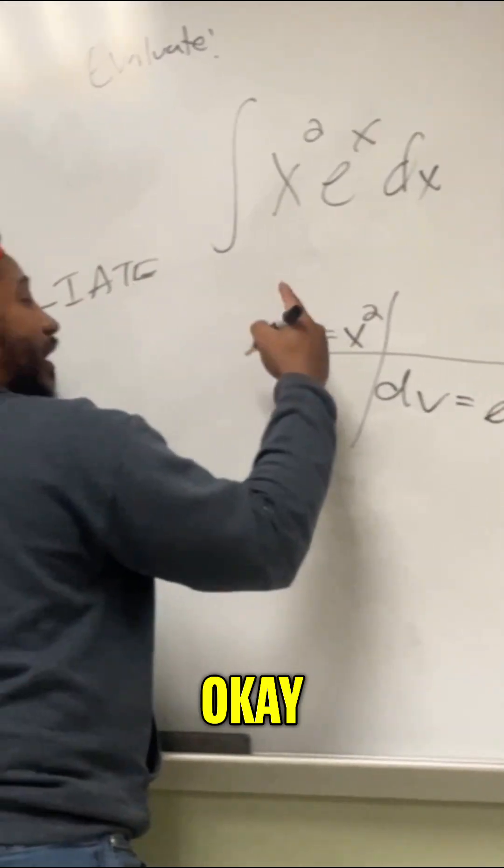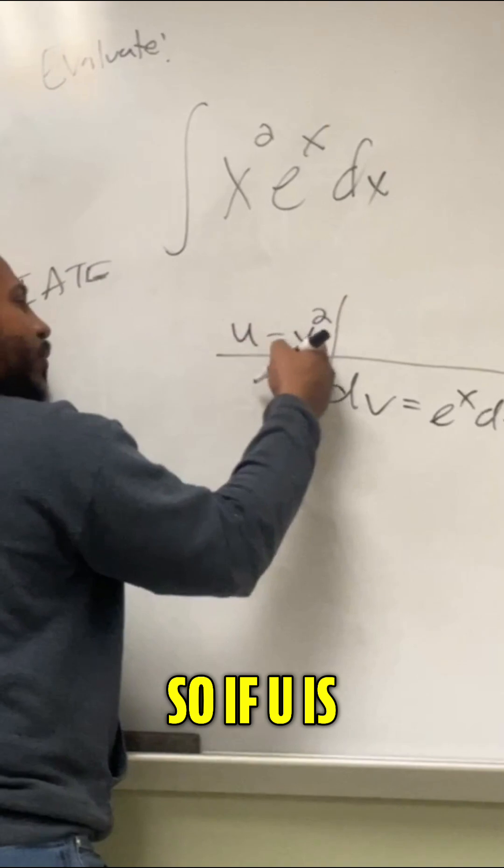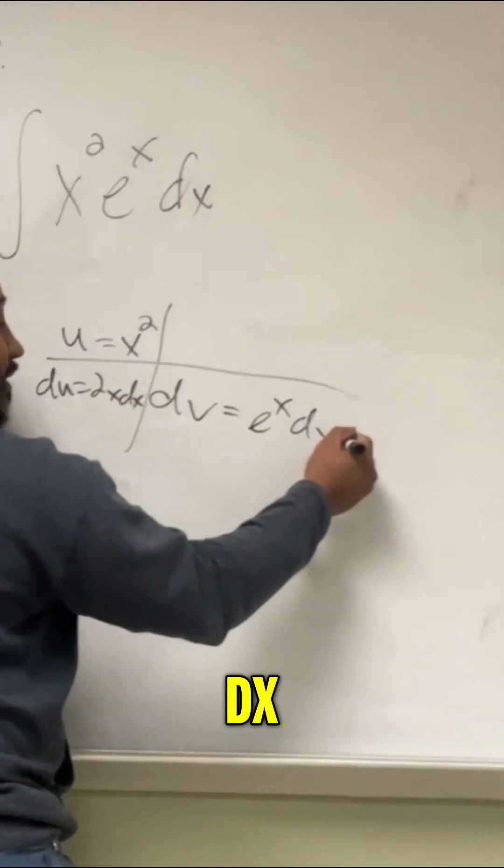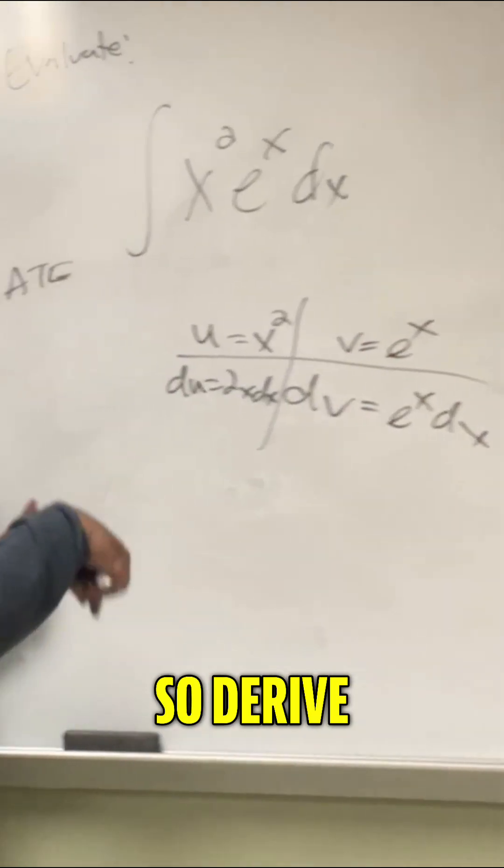And now we have to fill in this box, meaning, okay, derive down, integrate up. So if u is x squared, then du is 2x dx. If dv is e to the x dx, then v would be e to the x. So derive down, integrate up.